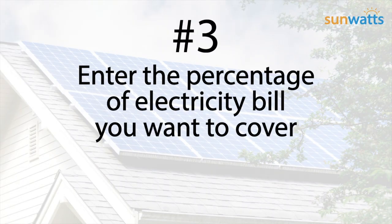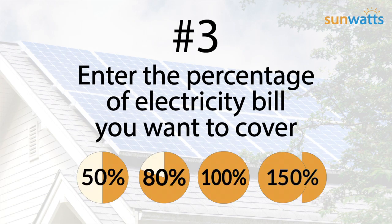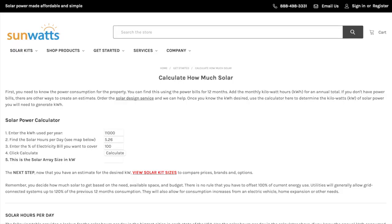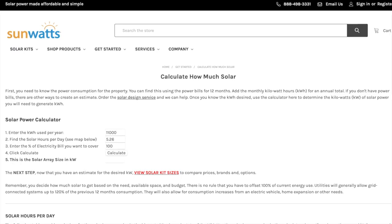The final piece of information is the amount of your electricity bill you want to cover — 50 percent, 80 percent, 100 percent, 150 percent. It's up to you, but let's start with 100. Enter the whole number into number three. Do not include the percent symbol.